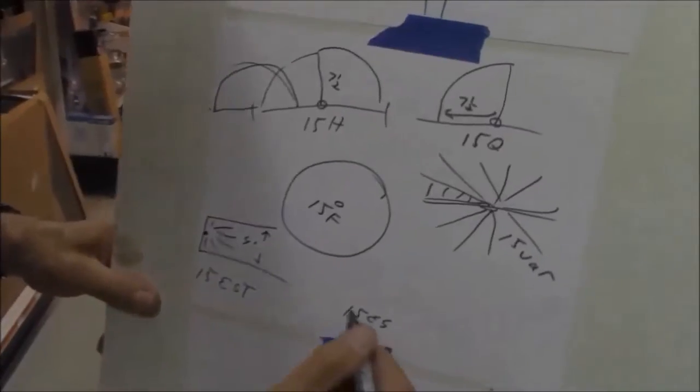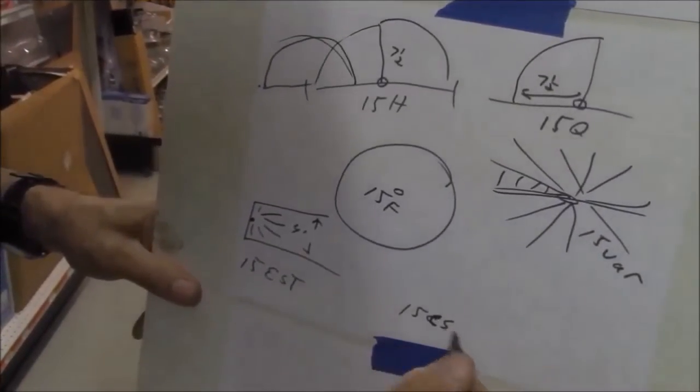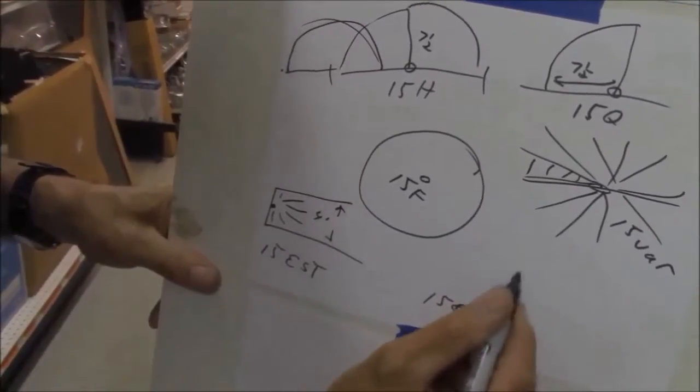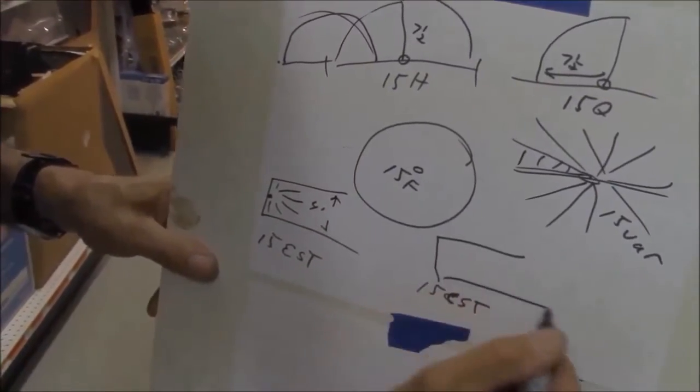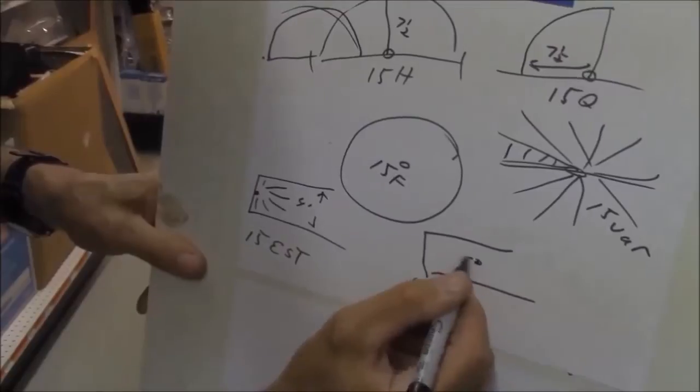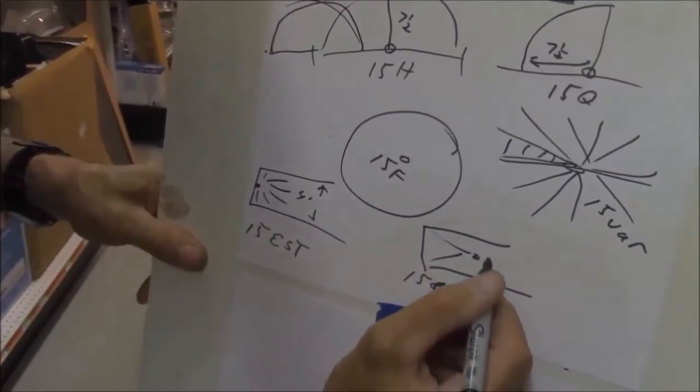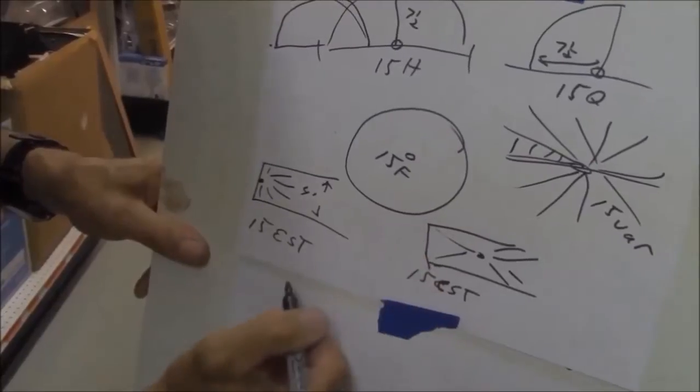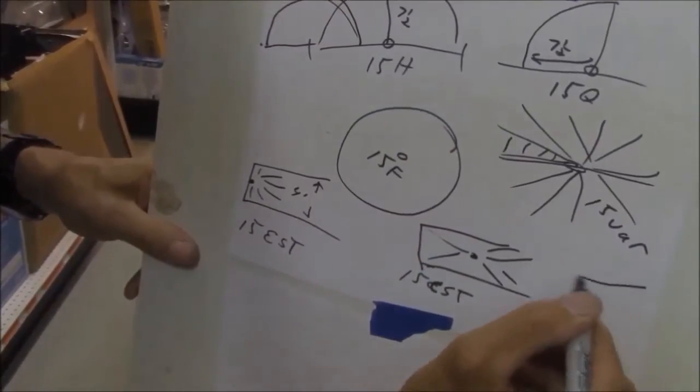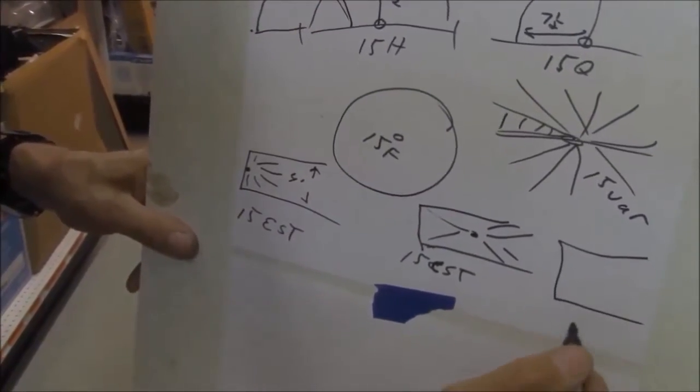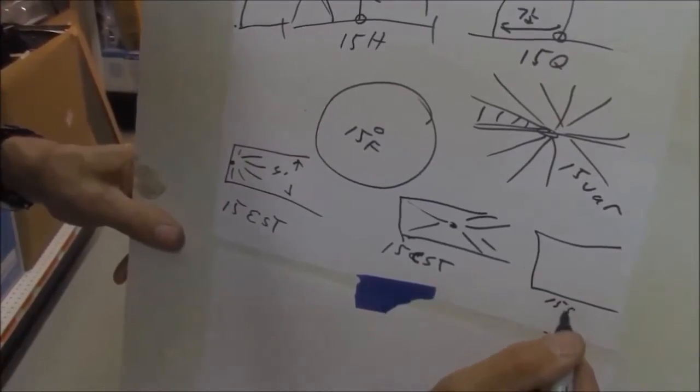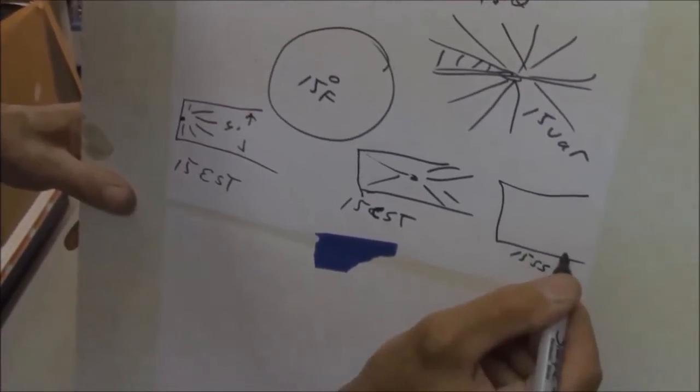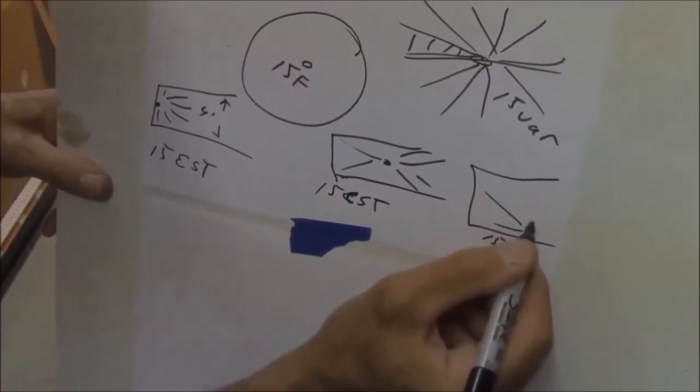Then I got, there's a 15CST, which is a center strip. So I'm in my boulevard. And I can do seven feet by four feet from the center of a boulevard. And then there's a 15SST. And that stands for side strip. And that means the head goes here. And it goes this way.